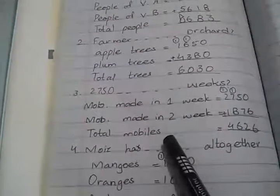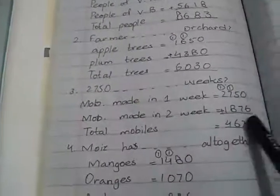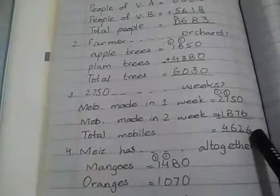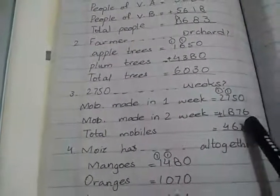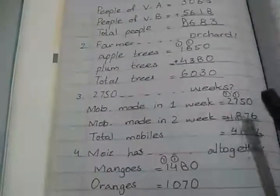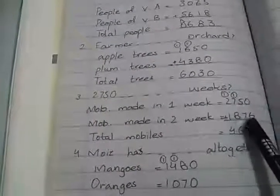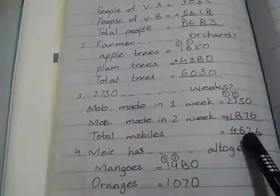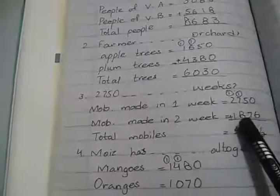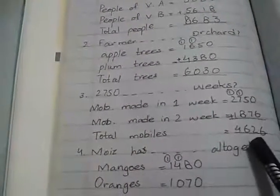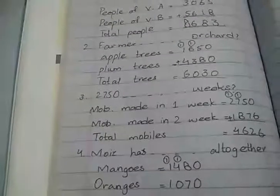To find the total mobile phones we do addition: 0 and 6 is 6; 5 and 7 is 12, write 2 carry 1; 7 and 8 is 15 and 1 is 16, write 6 carry 1; 2 and 1 is 3 and 1 is 4. Total phones are 4,626.